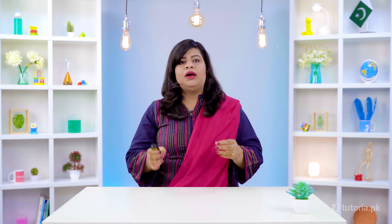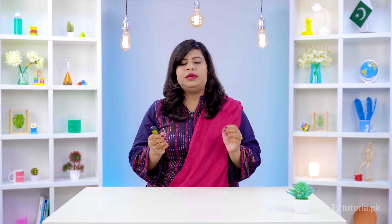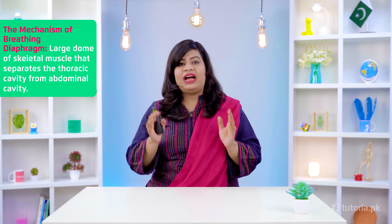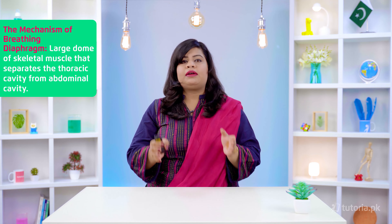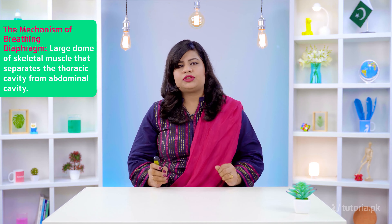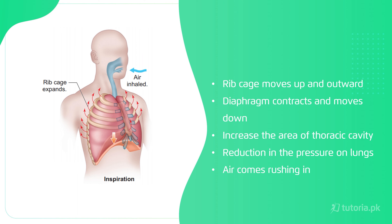The breathing mechanism relies on the diaphragm, a very important structure. The diaphragm and intercostal muscles control the expansion and contraction of the lungs. The diaphragm is a large dome of skeletal muscle that separates the thoracic cavity from the abdominal cavity. During inspiration, the rib cage moves upward and the diaphragm contracts and moves downward. This increases the space in the thoracic cavity and reduces pressure in the lungs, so air enters the body.